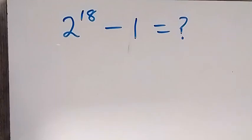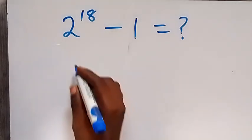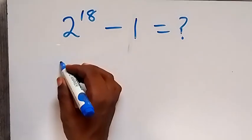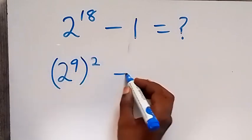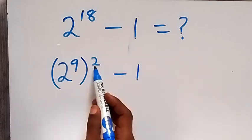Hello, you are welcome. Here we want to simplify this problem: 2 raised to power 18 minus 1. From here, we can write this as 2 raised to power 9, then raised to power 2, minus 1, because 2 times 2 here is 18.